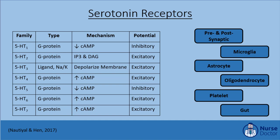Serotonin receptors are located in a variety of locations — diffusely in pre- and postsynaptic neurons in the central nervous system, the microglia, astrocytes, oligodendrocytes, platelets, and the gut. Interference with platelet serotonin receptor activity can influence bleed risk, which is why SSRIs as well as SNRIs carry a risk of bleeding. Gut serotonin receptor alterations can inform the side effect of GI upset and nausea with antidepressants targeting serotonin receptors.